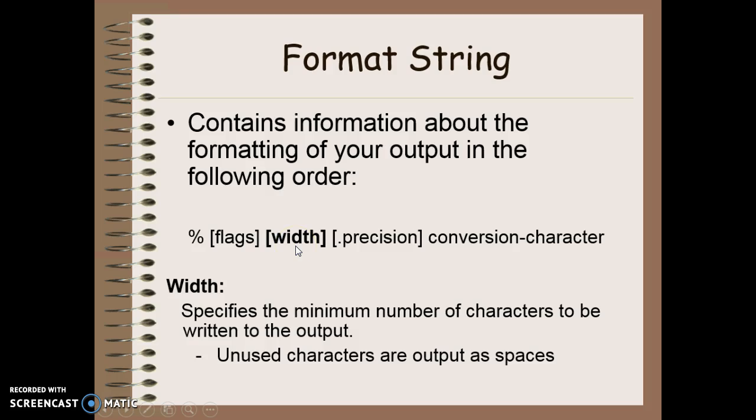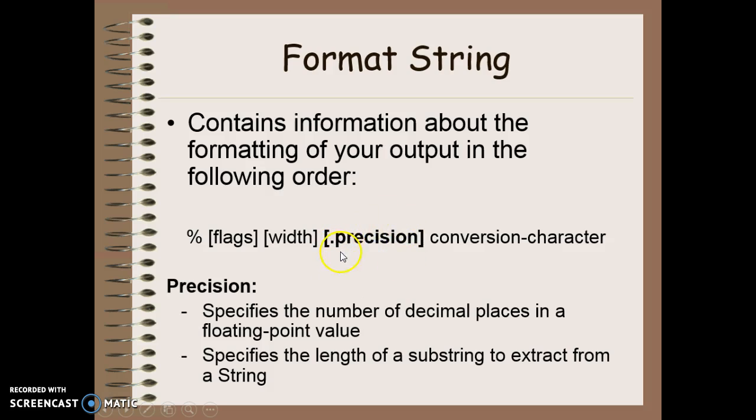The width option specifies the number of characters that have to be included in my output. So if I put a number 8 here for example, my output would be shown in 8 characters, left justified for strings, right justified for numbers unless of course I used a minus sign in my flag there. Any unused characters, so if I said I wanted to have 8 characters but my output only had 3 characters, those unused characters are displayed as spaces. Precision, I have to have a dot and then a numerical value here, would show me precision. This specifies the number of decimal places in a floating point value. Again it's optional because it's shown here in square brackets. I don't have to include a precision option if I don't want. If I were to be outputting a string, this precision, instead of giving me the number of decimal places, it will give me the length of a substring to extract from the string and output.